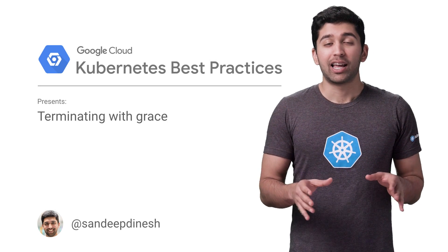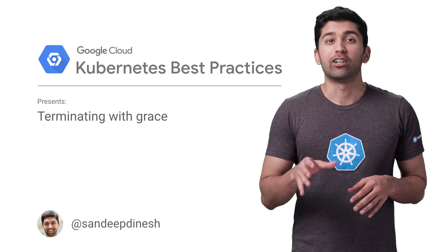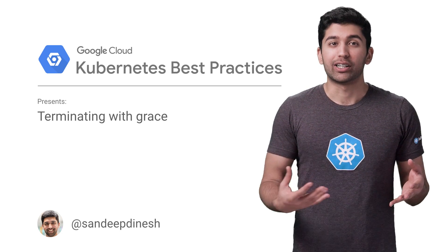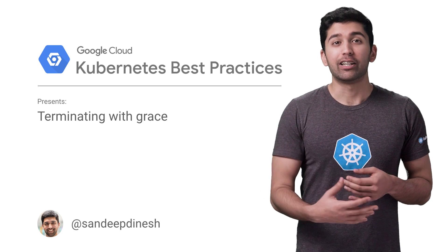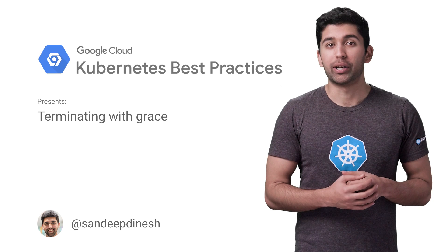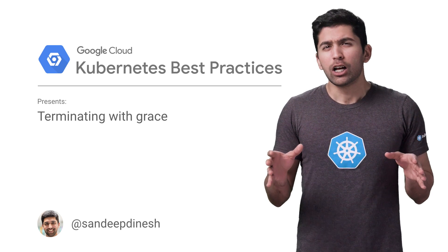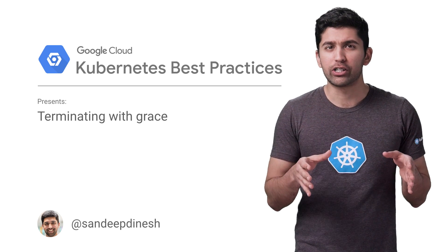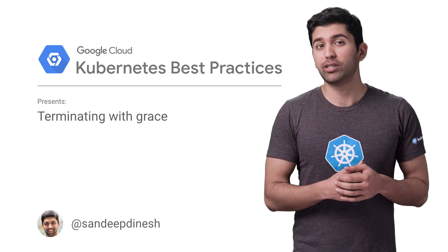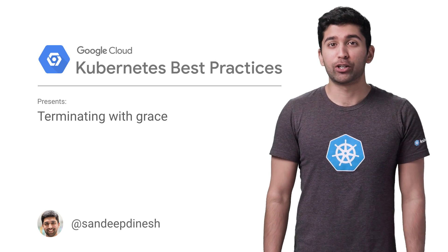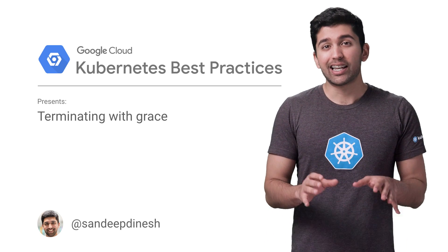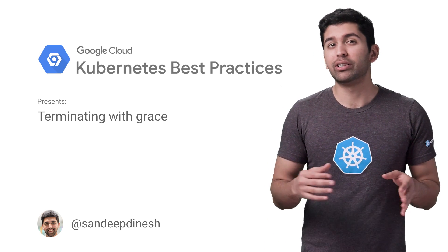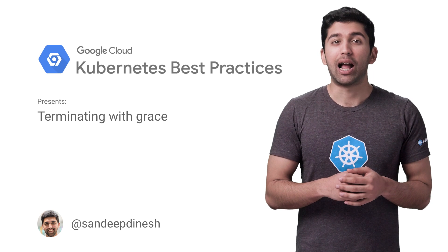When it comes to distributed systems, handling failure is key. Kubernetes helps with this by utilizing controllers that can watch the state of your system and then restart services that stop performing. But on the other hand, Kubernetes can actually forcibly terminate your applications to ensure the overall health of the system. In this episode of Kubernetes Best Practices, let's take a look at how you can help Kubernetes do its job more efficiently and reduce the downtime your apps experience.